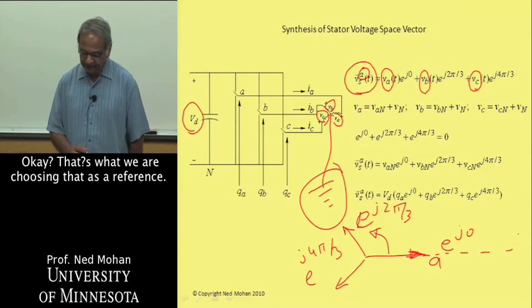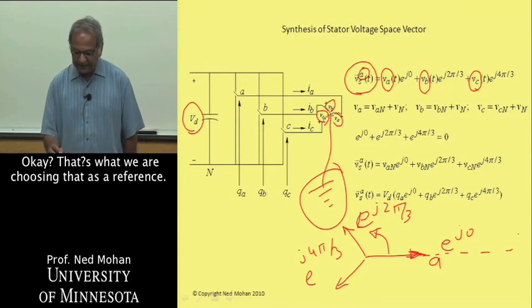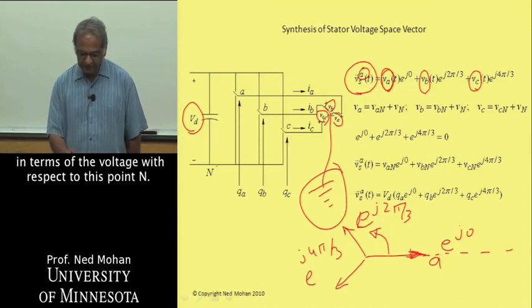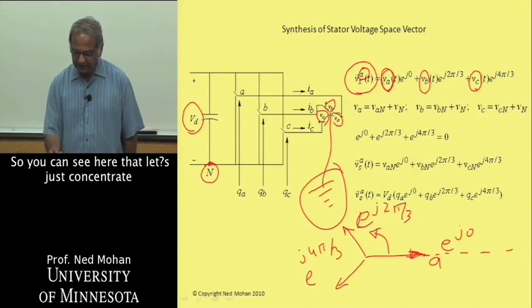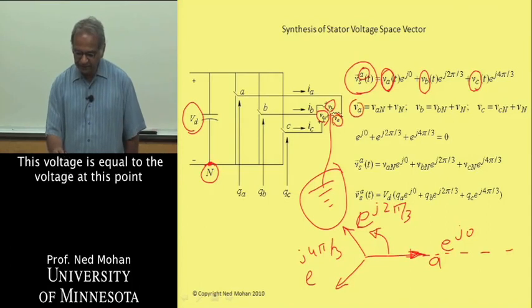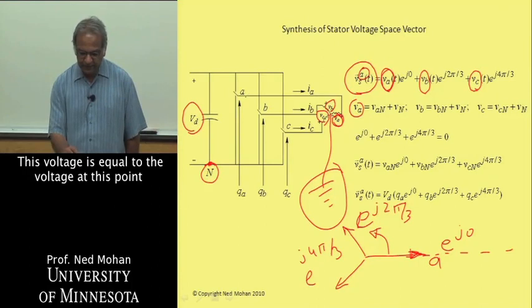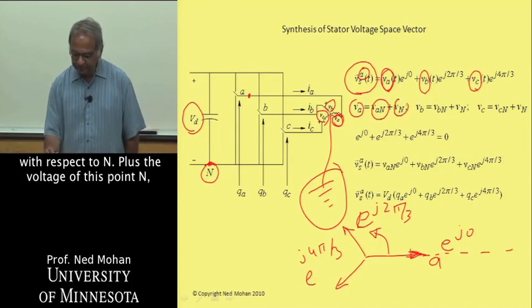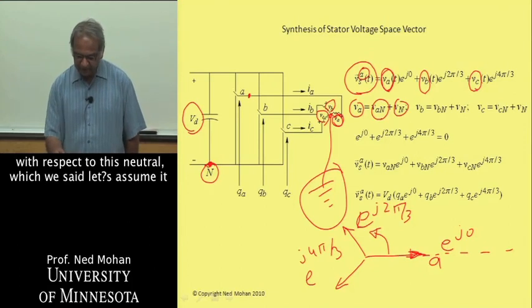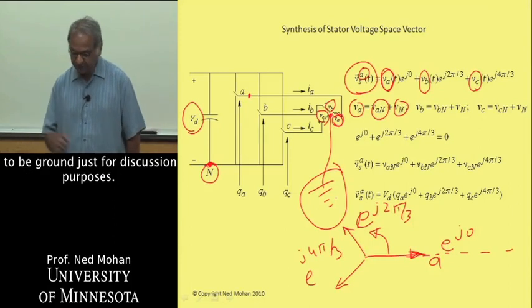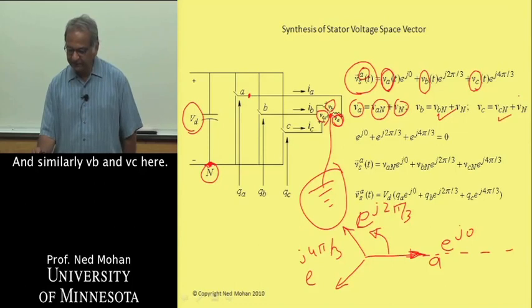Each of these three phase voltages can be written in terms of the voltage with respect to this point N. You can see here that this voltage VA is equal to voltage of this point with respect to N plus the voltage of this point N with respect to this neutral, which we said let's assume it to be ground just for discussion purposes. And similarly, VB and VC here.